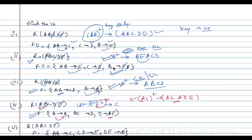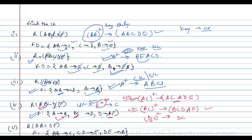There may be more than one candidate key for this relation. Trying BC closure: with B and C we identify D, and with D we identify A — so we can identify everything. BC is also a candidate key. Trying DC closure: with D we identify AE, and with A we identify B — so DC is also a candidate key.